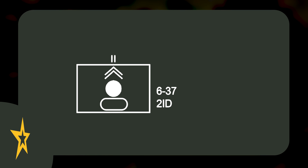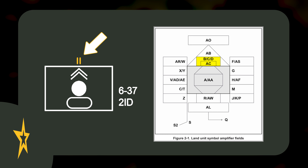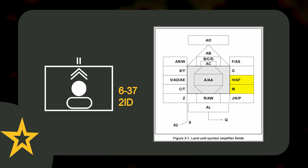In future videos we'll go over some of them, but two of the most common you'll see in a unit are echelon in field B above, and the unit's alphanumeric designation in field H on the right. Once you've placed any necessary amplifiers, you've officially completed your framed symbol.